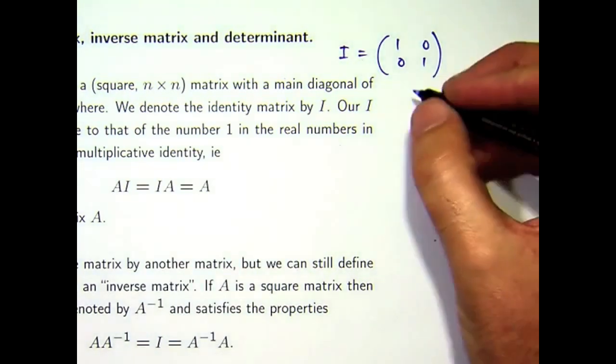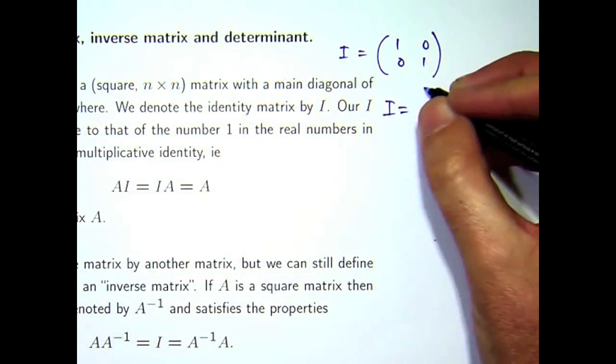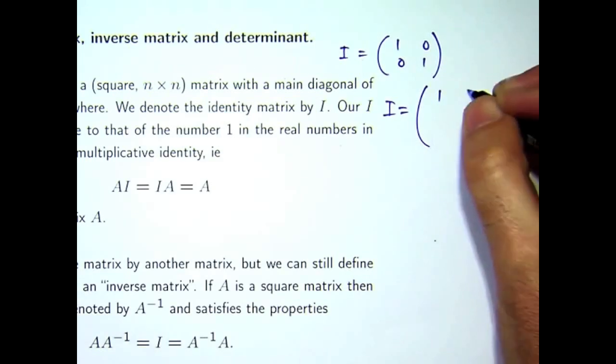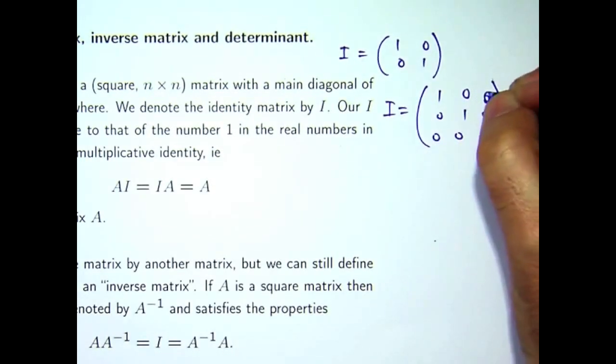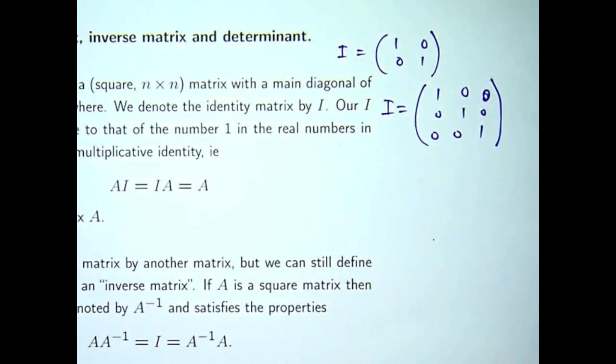So let's say if I wanted to write down a 3x3 identity matrix. Here it's a bit bigger than the previous one. You've got 1s down that main diagonal, and 0s everywhere else.